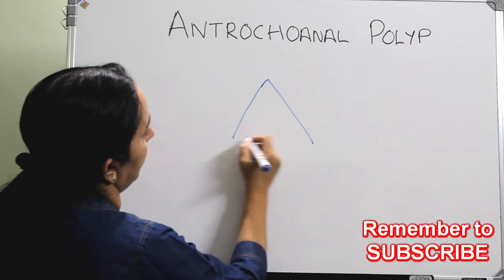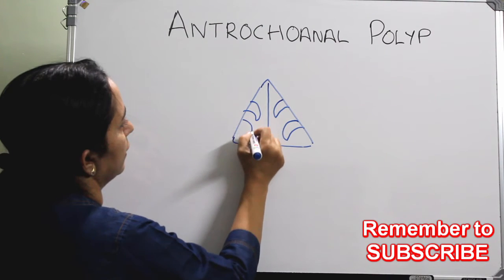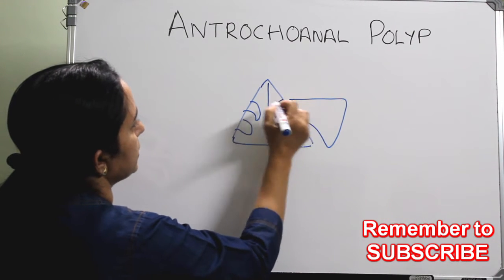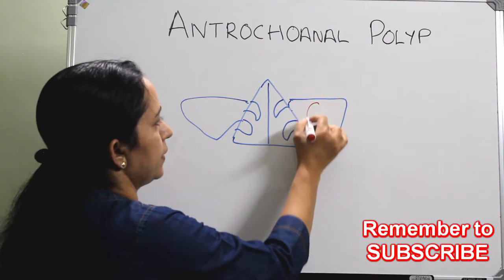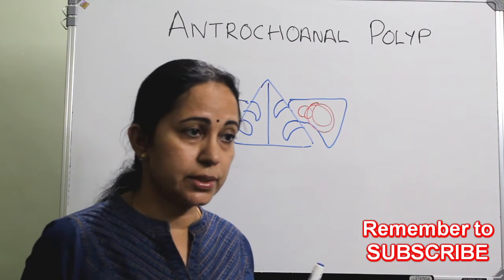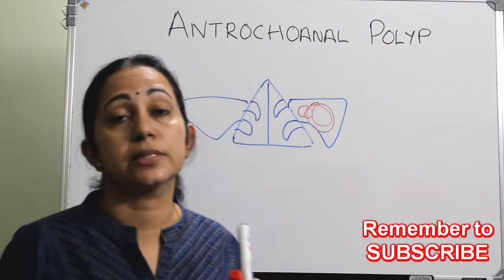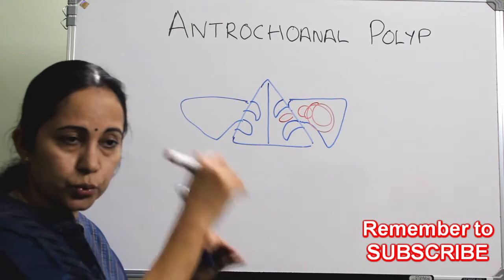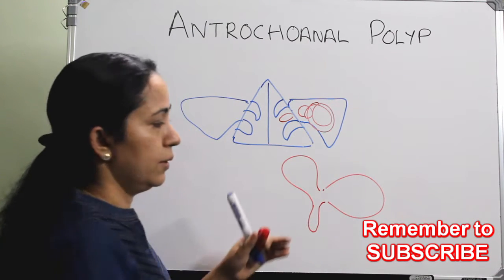From the nose, with the middle turbinate and inferior turbinate, here comes the maxillary sinus. This polyp arises from the maxillary sinus and goes through the accessory ostium most commonly. There are two ostia: a natural ostium and an accessory ostium, present in a percentage of persons. This antrochoanal polyp is coming into the nose through the accessory ostium, and from there it goes posteriorly.